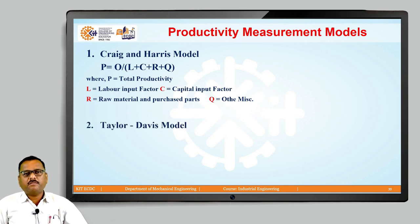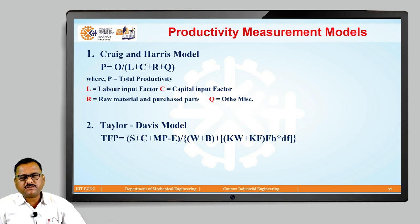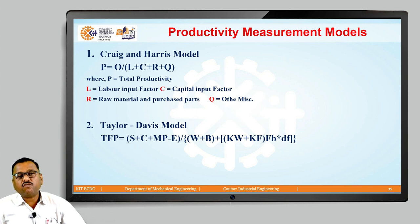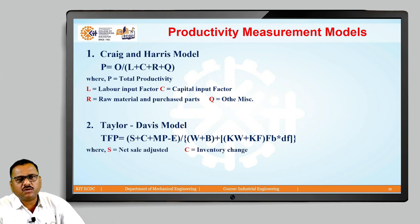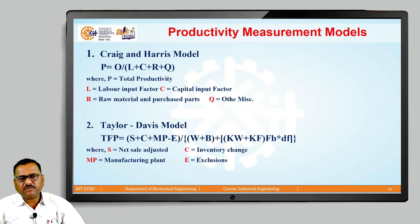The second model to measure productivity is the Taylor and Davis model. This model states that the total factor productivity (TFP) can be obtained as (S + C + MP − E) divided by (W + B + KW + KF × FB × DF). On the output side: S is net sales adjusted, C is inventory change, MP is manufacturing plant output, and E is exclusions which we subtract. This gives us the output generated within the organization.